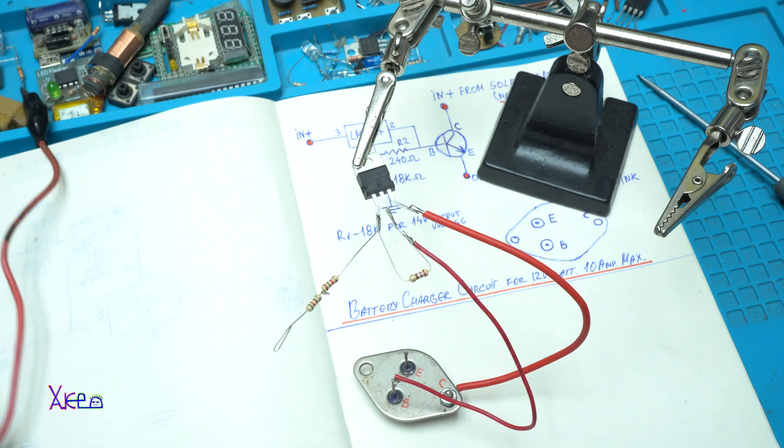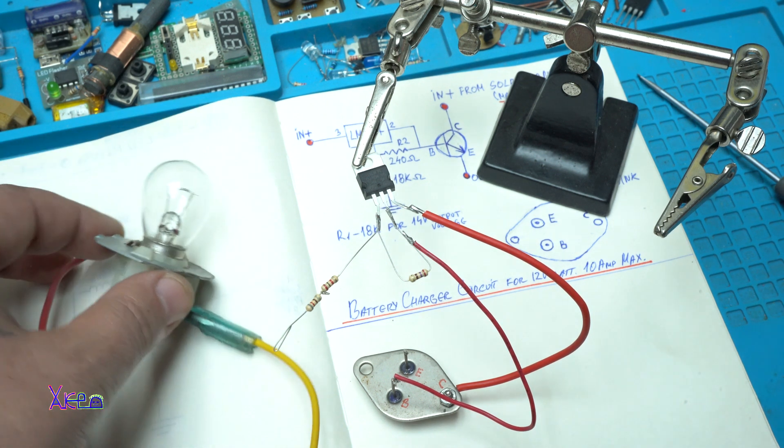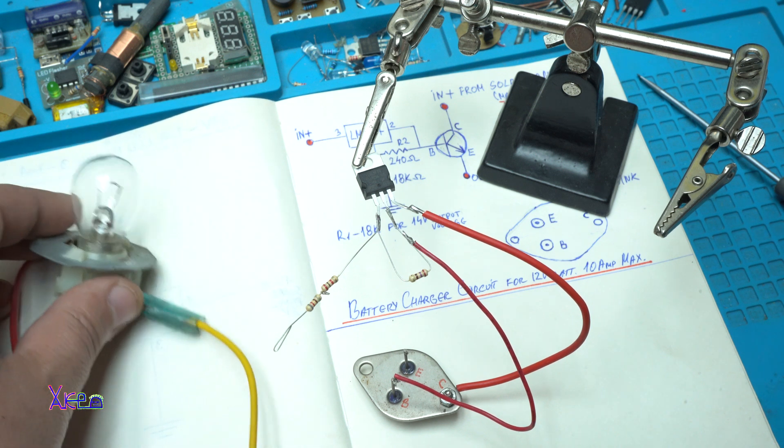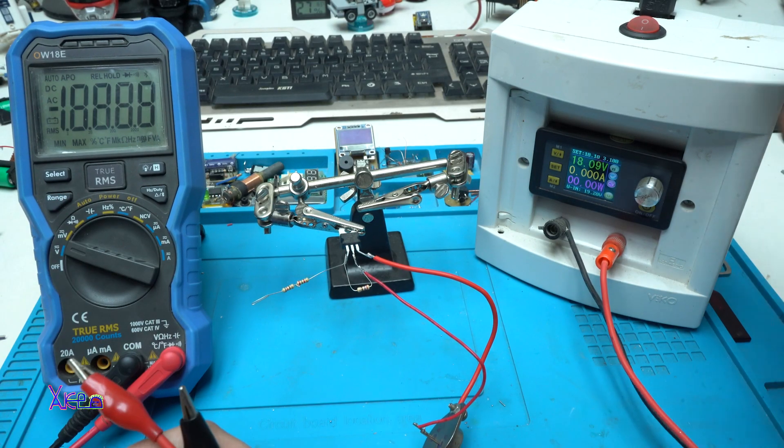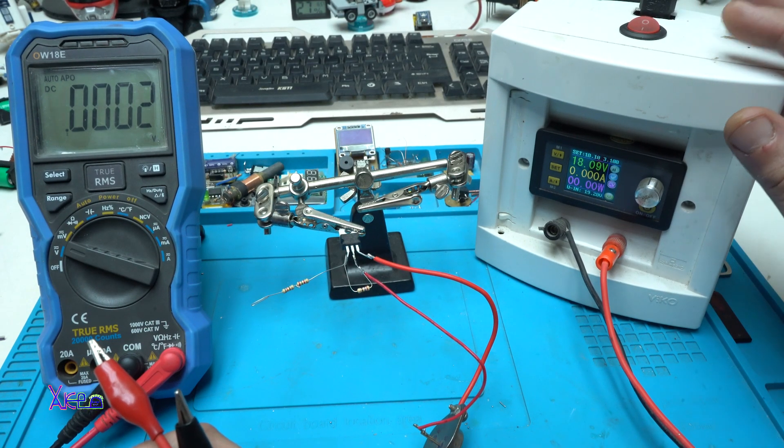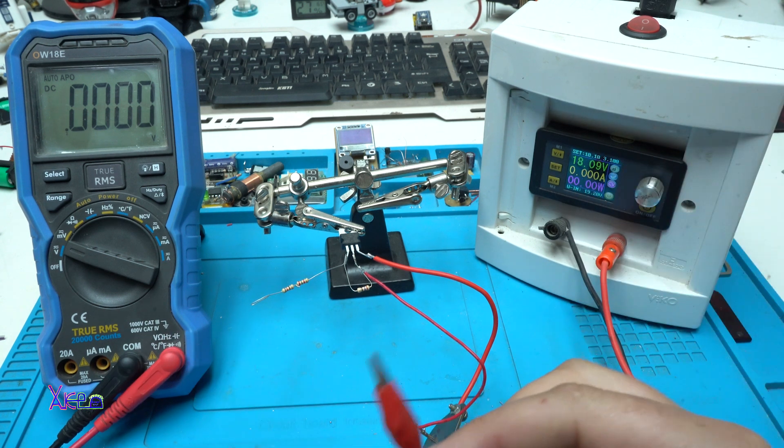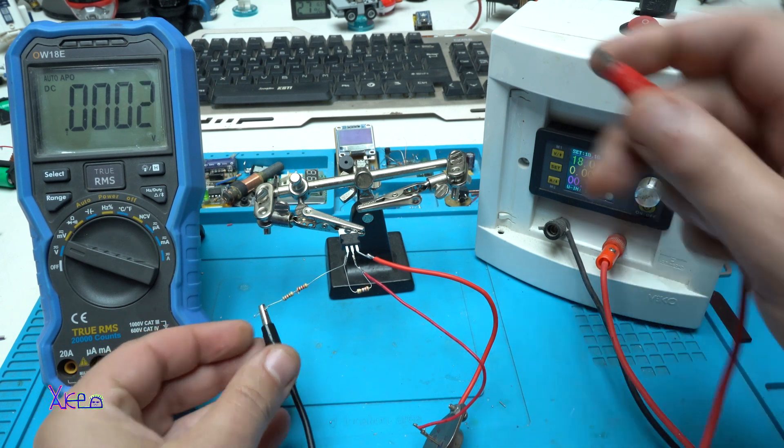Also as a load I am going to use this car bulb that is pulling around 1.5 amps. From the right side I have my homemade digital power supply. It is set on 18 volts. I am going to power the circuit right now.